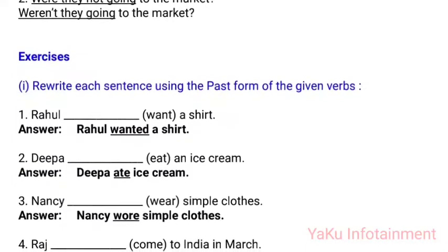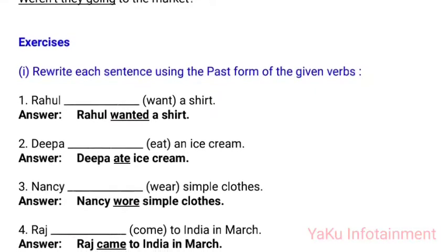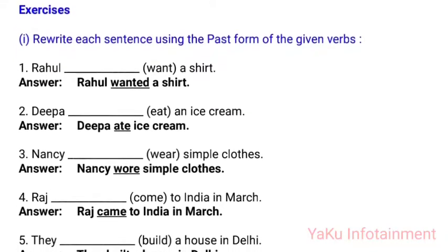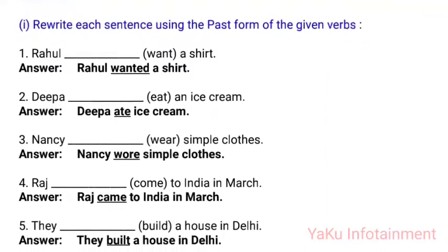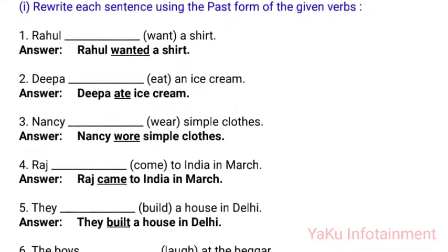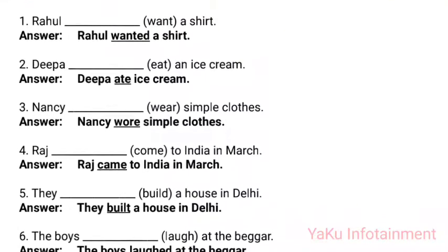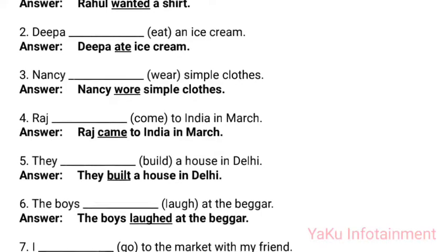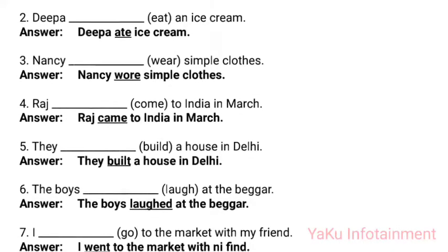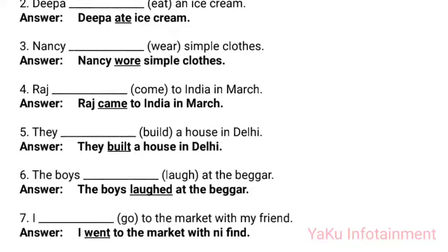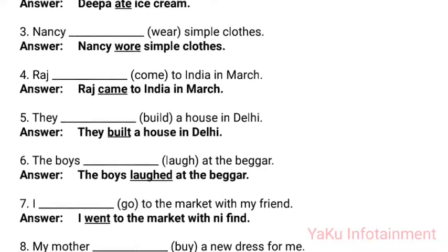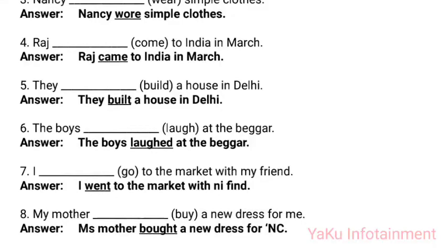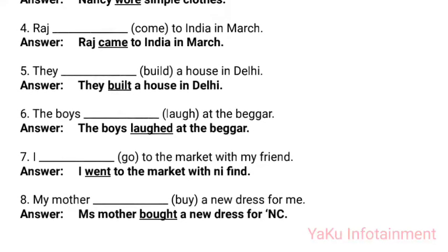Exercises: Rewrite each sentence using the past form of the given verbs. (1) Rahul wanted a shirt. (2) Deepa ate ice cream. (3) Nancy wore simple clothes. (4) Raj came to India in March. (5) They built a house in Delhi. (6) The boys laughed at the beggar. (7) I went to the market with my friend. (8) My mother bought a new dress for me.